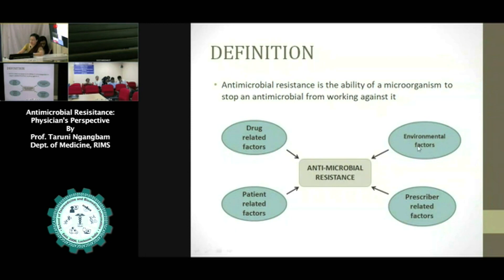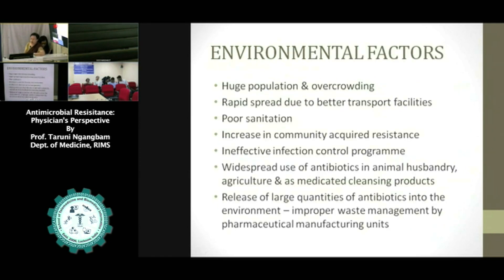The factors include environmental factors, prescriber-related factors, person-related factors, and drug-related factors. Environmental factors are one of the most important. Because of them, there is rapid spread of infections — we are seeing dengue now even in Manipur, not because the mosquito is here, but because infected individuals are bringing organisms directly through travel.